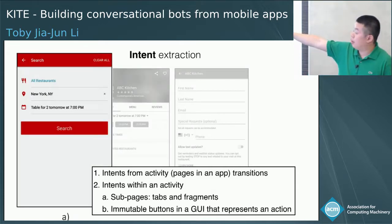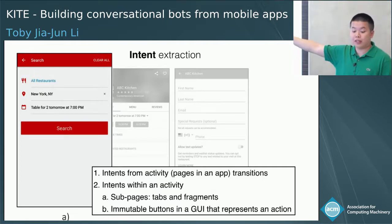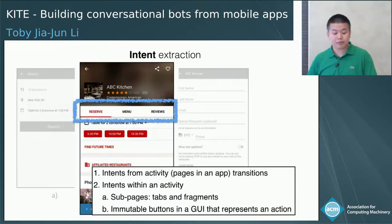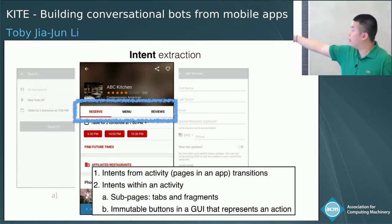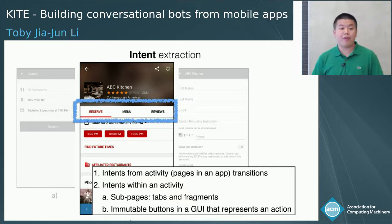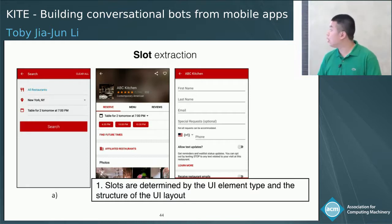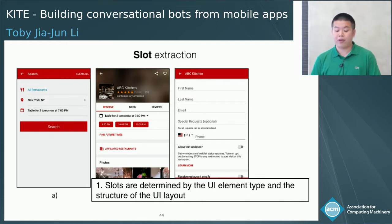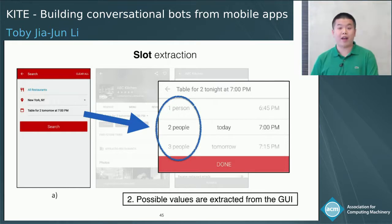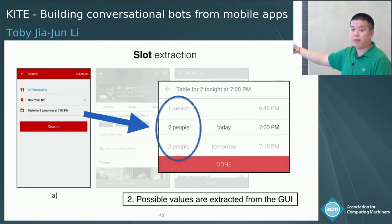For example, for the search activity in OpenTable, it represents the action of searching for a restaurant, which takes four slots: the type of restaurant, the location, the number of persons, and the time. In many apps, there are also subpages within an activity — like reserve, menu, and reviews — each representing an action, so we create an intent for those subpages as well. For each intent, Kite will extract the slots. This is challenging because app interfaces come in all kinds of layouts without a unified interface, so we developed a heuristic that can accurately extract slots from app interfaces. Kite will also extract possible values for slots — for example, for number of people, the possible values are one person, two people, three people, and so on.